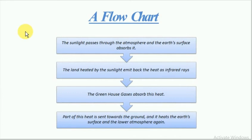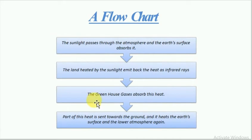In the flowchart diagram of the greenhouse effect: the sunlight passes through the atmosphere and the earth's surface absorbs it. The land heated by sunlight emits back the heat as infrared radiation. Part of this heat is sent towards the ground and it heats the earth's surface and the lower atmosphere again.